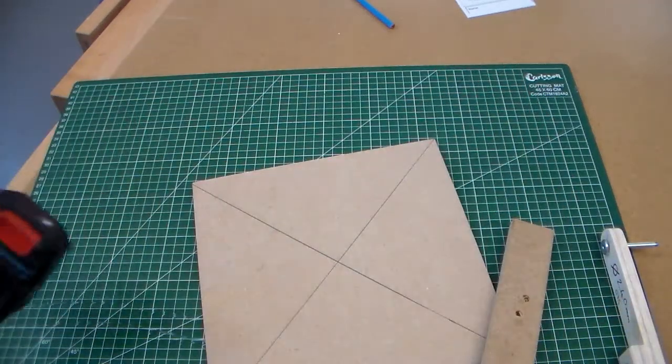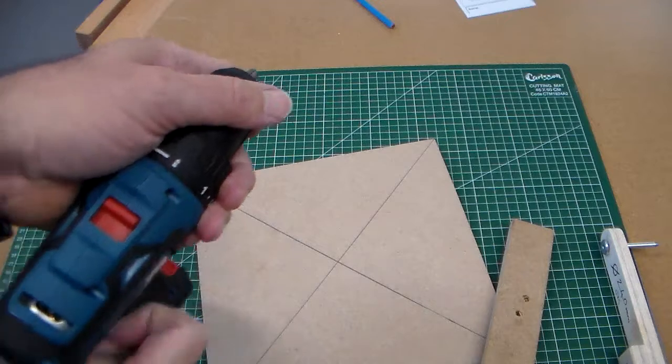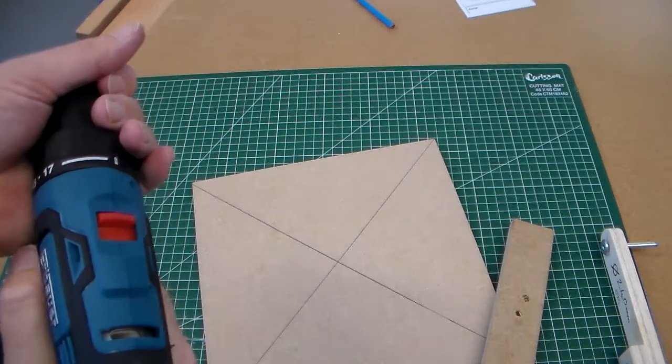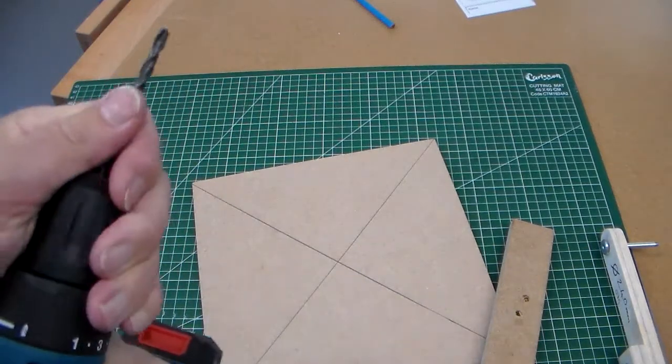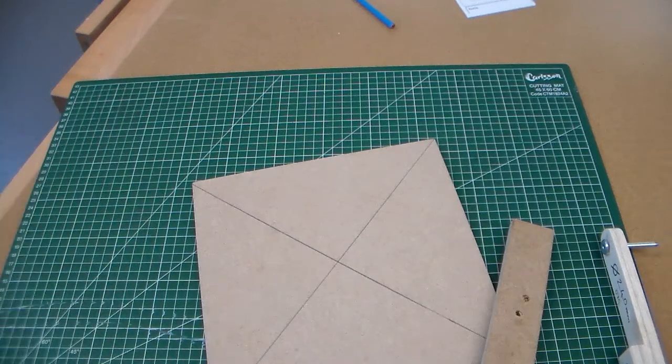Then I'm going to, just for ease, I'm going to use the cordless drill. So I'm going to take my 5.5mm twist drill and fit it into there.